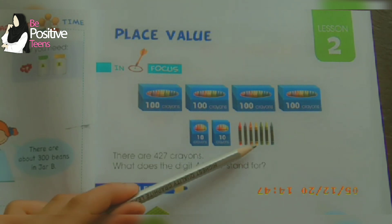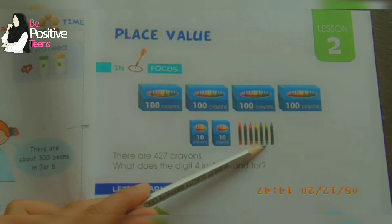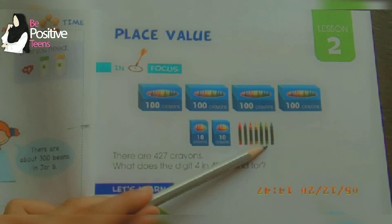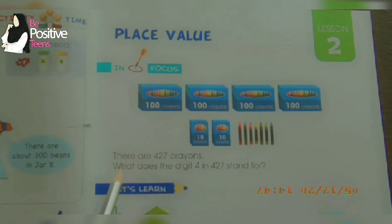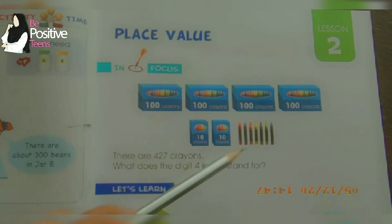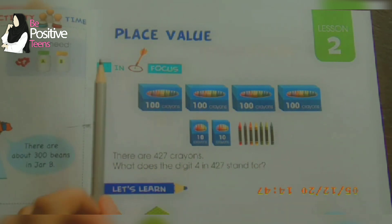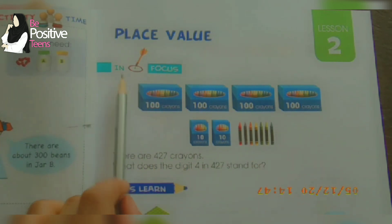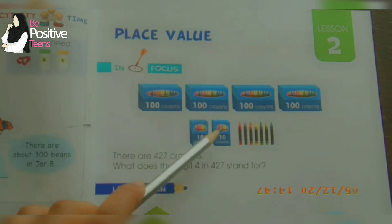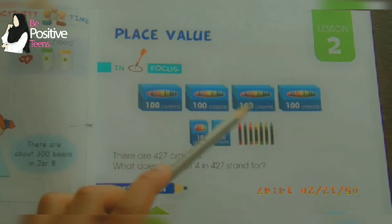Next we have single crayons — one, two, three, four, five, six, and seven. There are seven single crayons. So there are four hundred and twenty seven crayons altogether. What does the digit four in 427 stand for? As I told you, there are four hundred, then twenty, then seven.